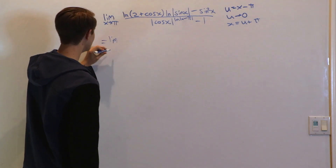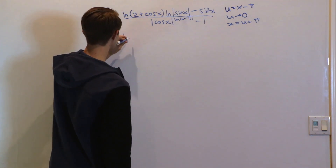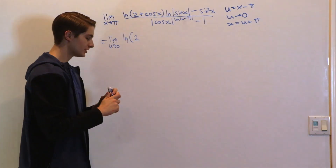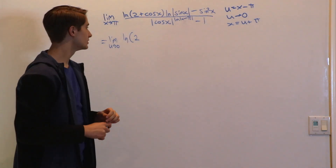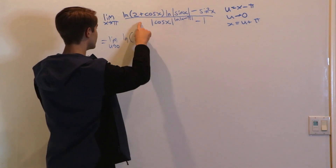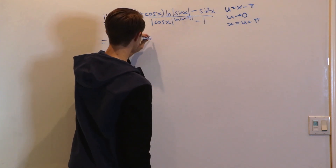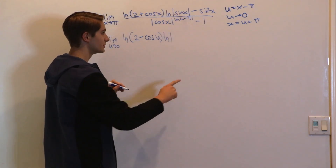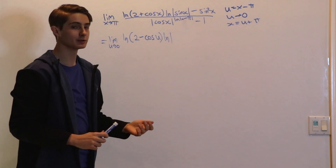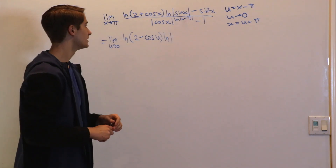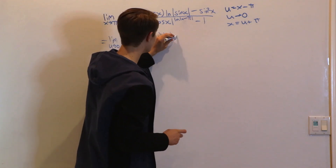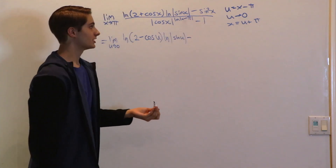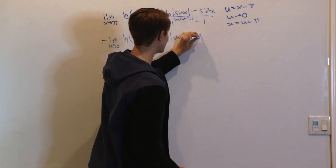This limit is equal to the limit as u approaches zero of: natural log of (2 + cos(u + π)). We know that cos(u + π) = -cos u, so this turns into 2 - cos u. Then we have the natural log of |sin(u + π)|. Since sin(u + π) = -sin u, but it's inside an absolute value, we can leave it as positive sin u. We subtract sin²u — again, squaring the negative gives a positive.